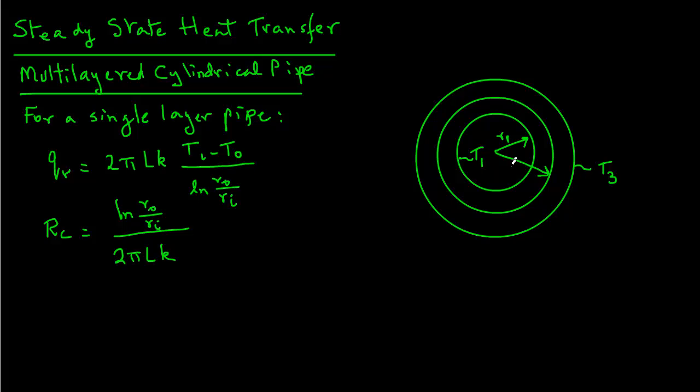And the outside radius of the inner pipe is R2. And with the outside layer, we have the outside radius as R3.